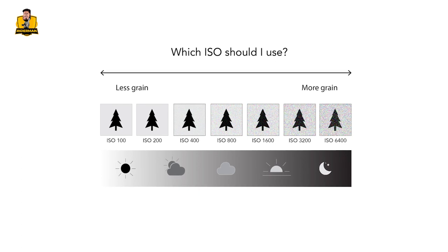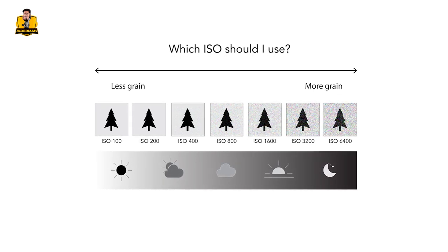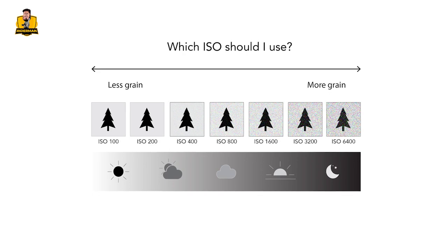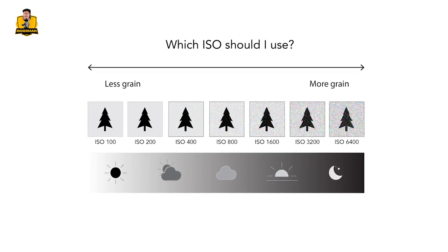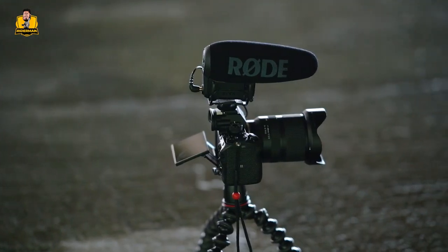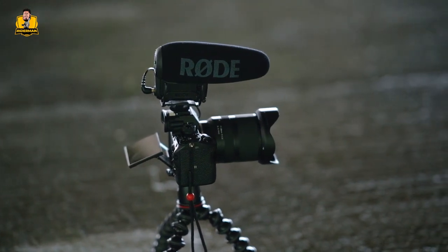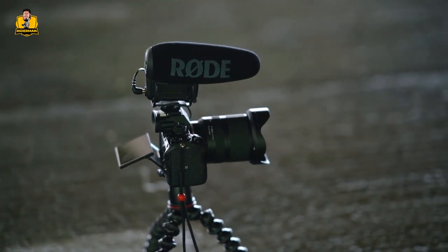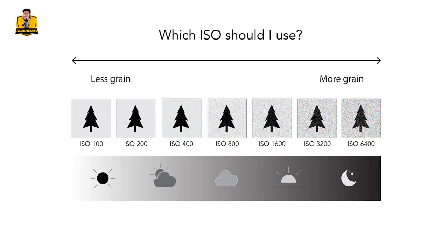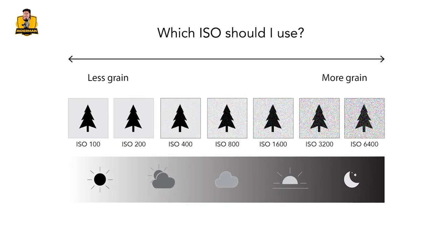Here are a few tips to keep in mind when using ISO. Try to keep the ISO as low as possible to minimise noise. Use a tripod to reduce camera shake when shooting at higher ISOs. Experiment with different ISO settings to understand their impact on your photos.